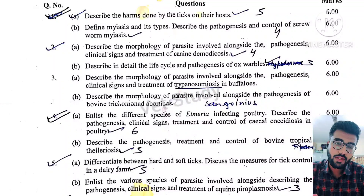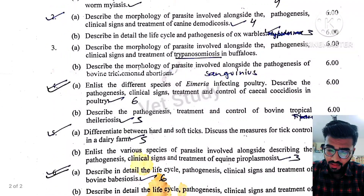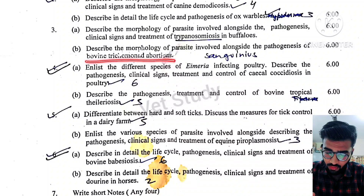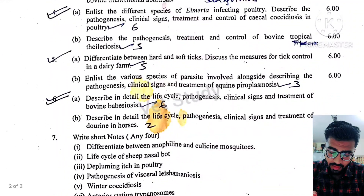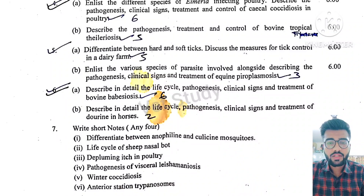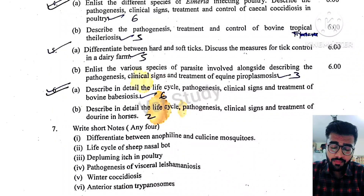Remember the cigar shape of Demodex — this is asked a lot. Next, describe in detail the life cycle and pathogenesis of ox warble. Then, trypanosomiasis in buffalo, and bovine trichomonal abortion were asked. A very important question is Eimeria — many species infect poultry. You can write a full page on Eimeria; there will definitely be questions on it.